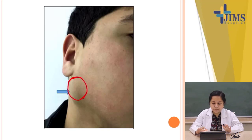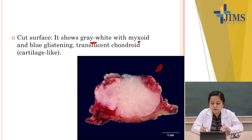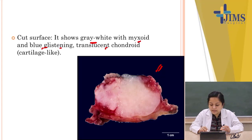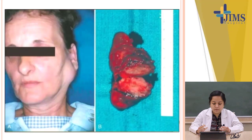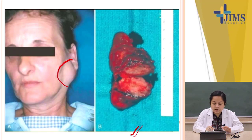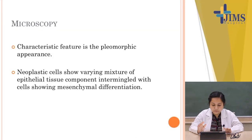Grossly, the tumor appears as a swelling at the angle of the mandible. On cut surface, it shows gray-white myxoid areas with a blue glistening, translucent appearance resembling cartilage. This image is from Robbins, showing parotid swelling and a cut section that is gray-white and hemorrhagic.